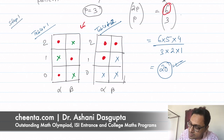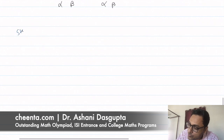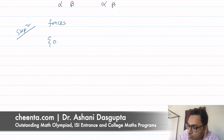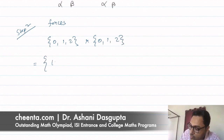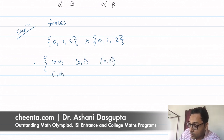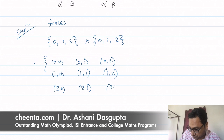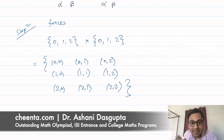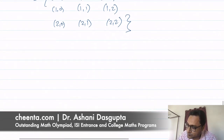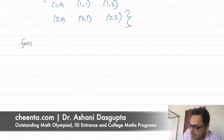In step 2, we created the forces. We took the set {0, 1, 2} and crossed it with another {0, 1, 2}, giving the nine ordered pairs: (0,0), (0,1), (0,2), (1,0), (1,1), (1,2), (2,0), (2,1), (2,2). These ordered pairs act as forces on the tablets.